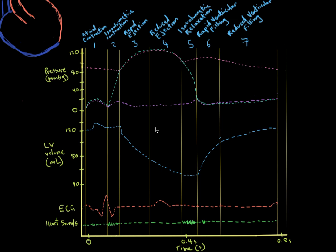Let's take a look at what we call the Wigger's Diagram. This diagram is a pictorial representation of the cardiac cycle — everything that happens during one heartbeat is represented here on this graph.